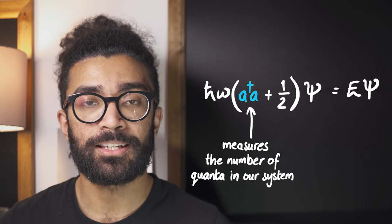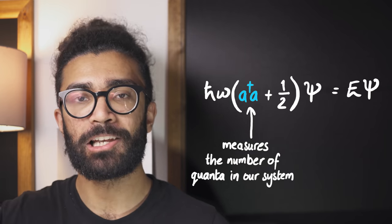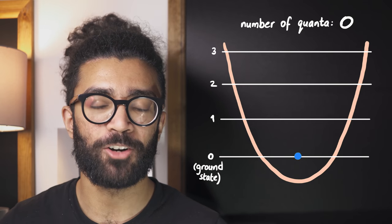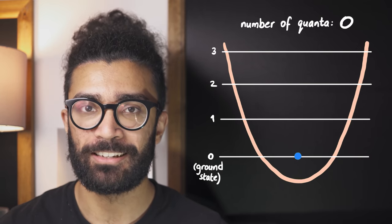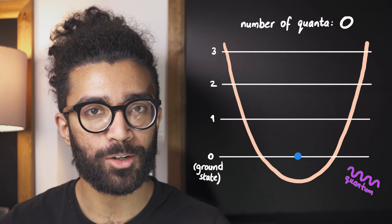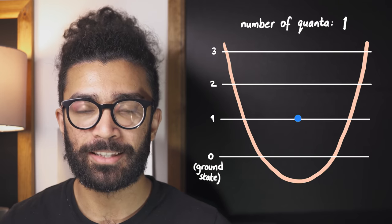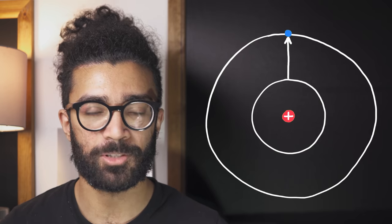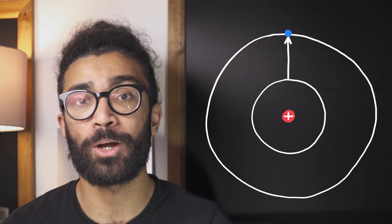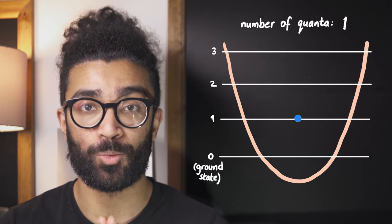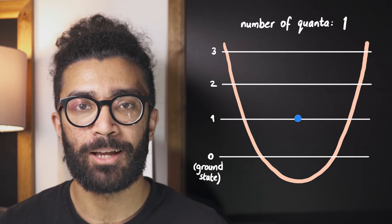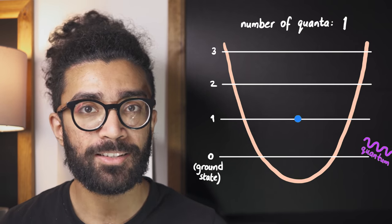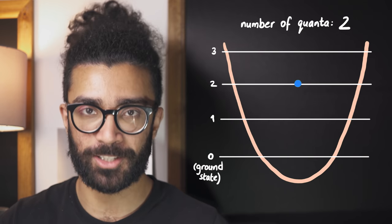What do I mean by this? If our system — our electron in this case — is in the lowest possible energy state, the ground state, then we say it has no quanta of energy within it. In order to move up to the next energy level, it has to gain one quantum of energy. You may be familiar with the idea that electrons in atoms can absorb photons and move up to higher energy levels. Well, this is exactly the same, except we're going to refer to the amount of energy needed as one quantum. And every time our electron transitions from one energy level to another, it gains a quantum if it's going up and loses a quantum if it's going down.